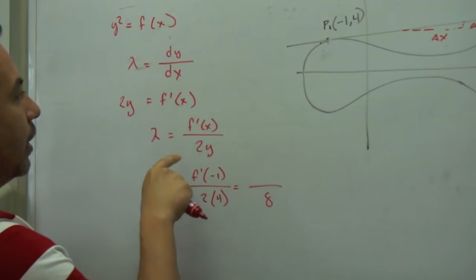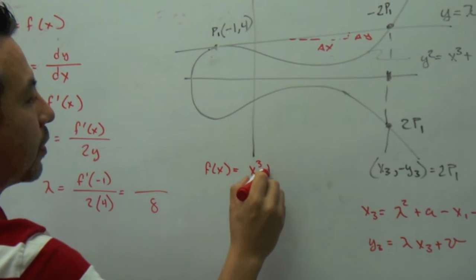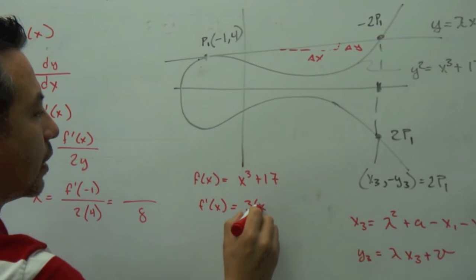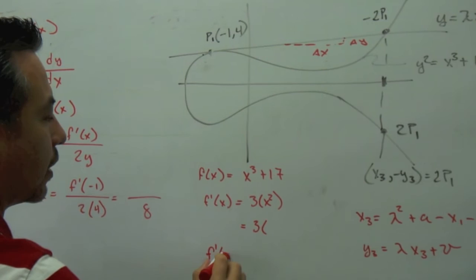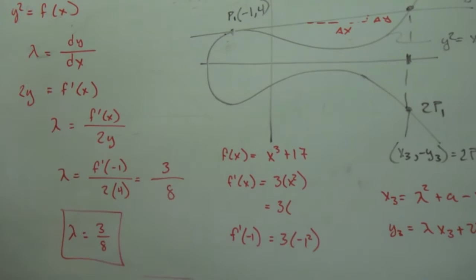And I know this point. So I know this x and I know this y. So then alpha equals f prime of negative 1 over 2 times 4. So this became 8. And f of x is this one. If f of x equals x cubed plus 17, then f prime of x equals 3 times x squared. So this equals 3 times f of x of negative 1, that's equal to 3 times negative 1 squared. So this is 3. So alpha equals 3 over 8.